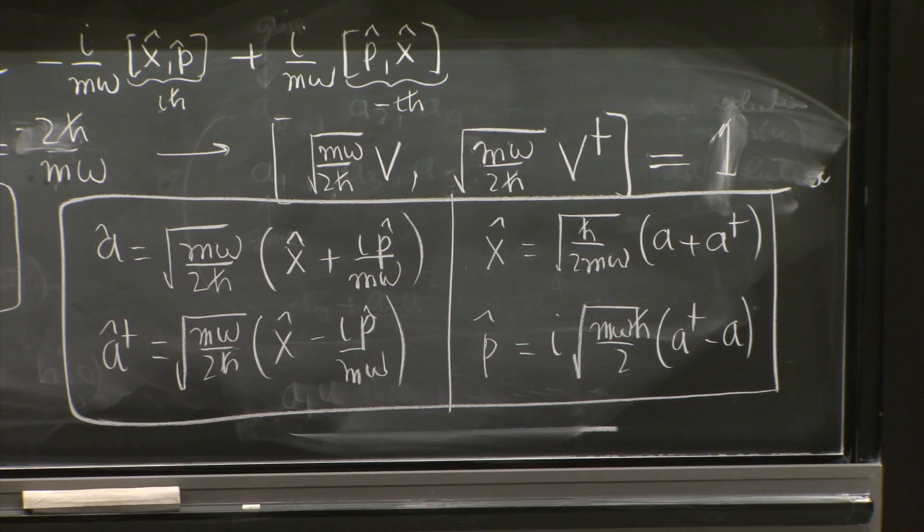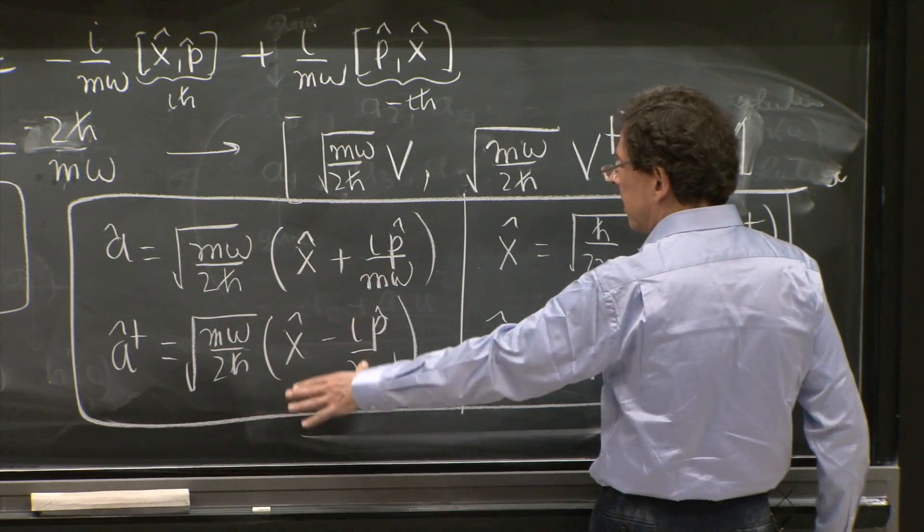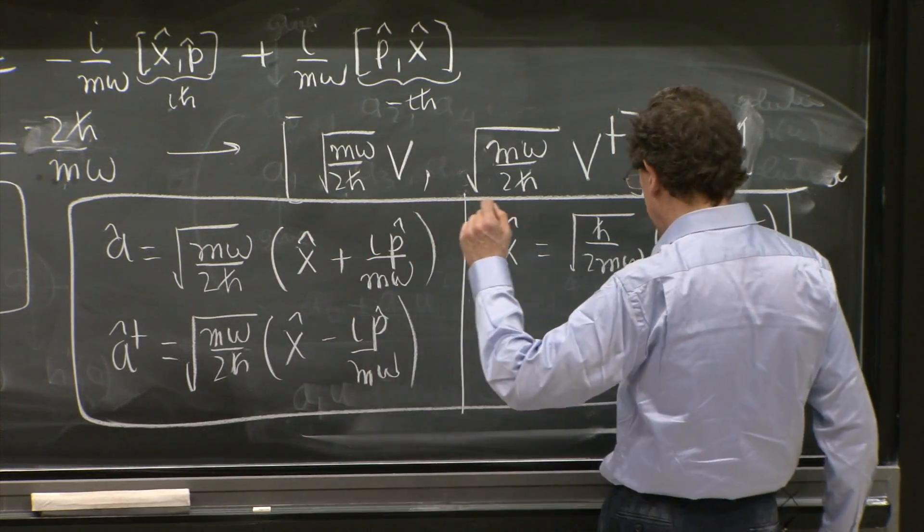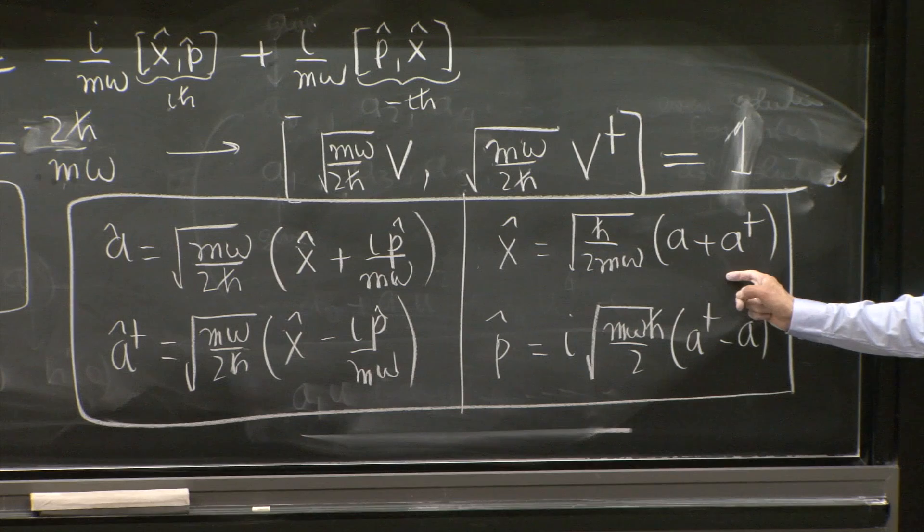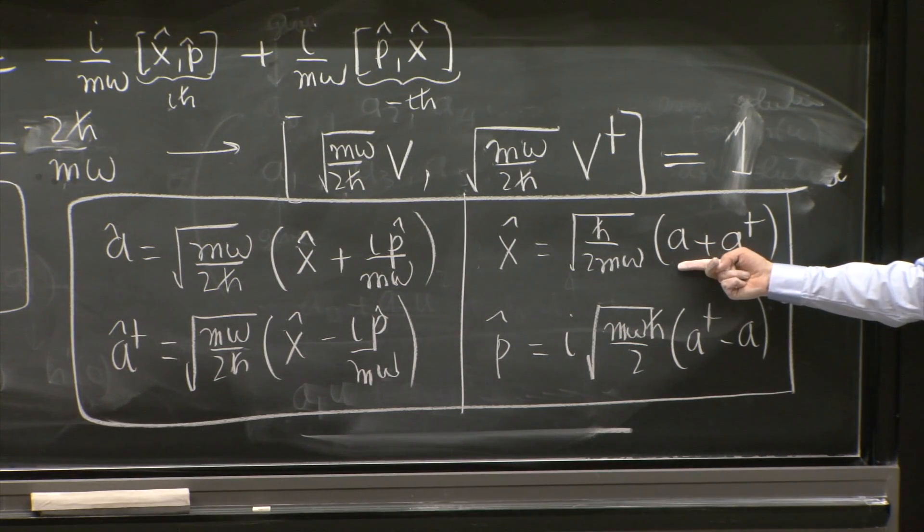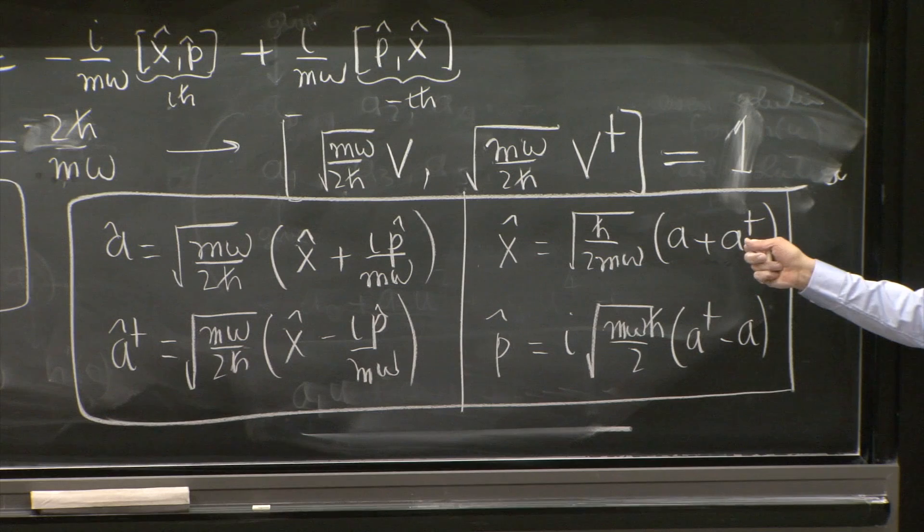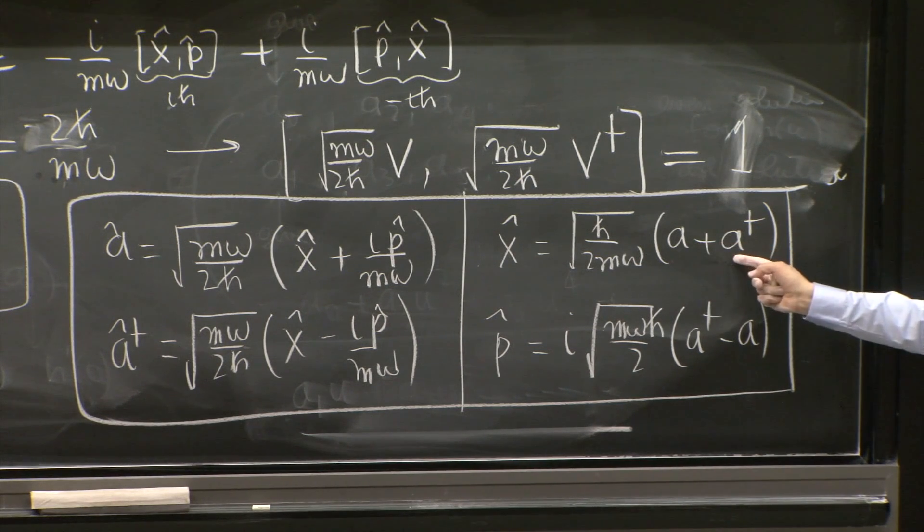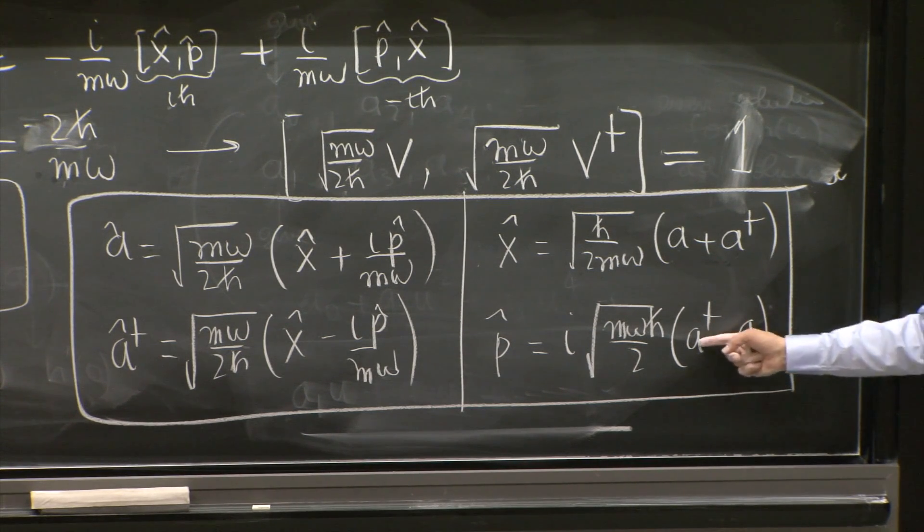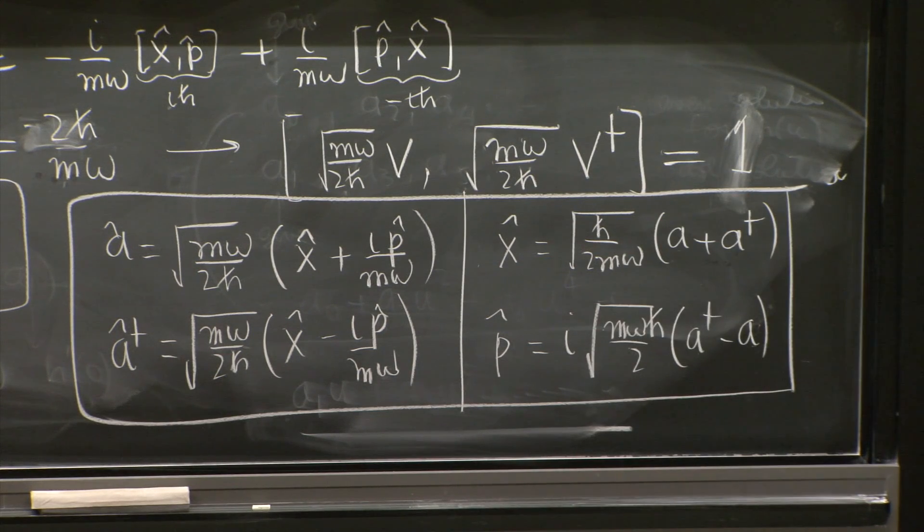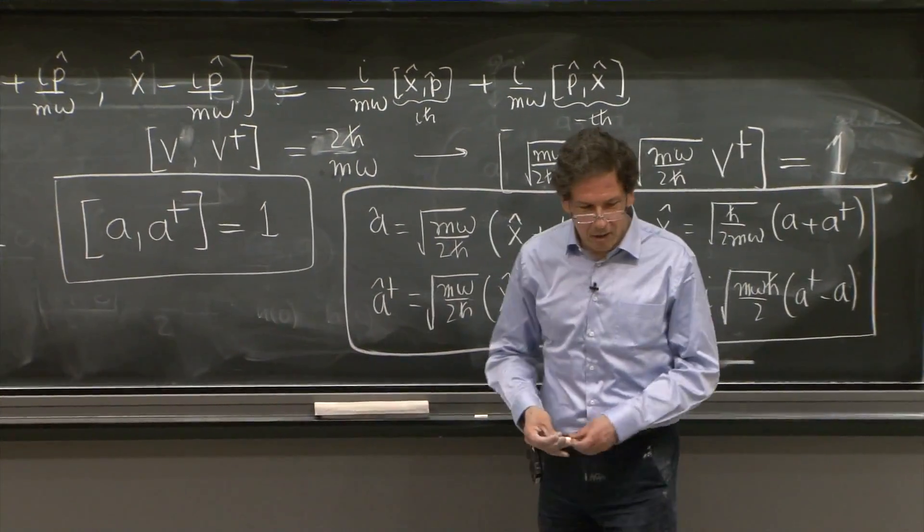Here are the things to know. This a and a dagger is visibly clear that one is the complex, the Hermitian conjugate of the other. Here, x is Hermitian. And indeed, a plus a dagger is Hermitian. When you do the Hermitian conjugate of a plus a dagger, the first a becomes an a dagger. The second a, with another Hermitian conjugation, becomes a. So this is Hermitian. But p is Hermitian. And here we have a dagger minus a. This is not Hermitian. It changes sign. Well, the i is there for that reason and makes it Hermitian. So there they are. They're Hermitian. They're good.